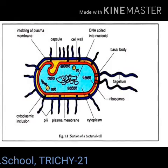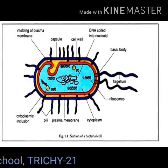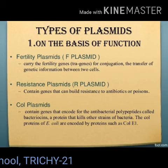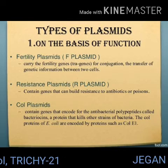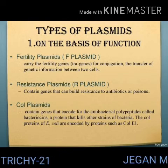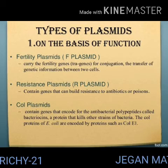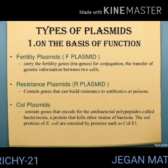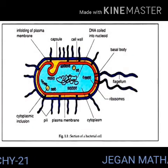The number of plasmids per cell varies, and plasmids are classified into different types based on their function. Some of them are: F (fertility) factors, R (resistant) plasmids, Col (colicine) plasmids, Ri (root-inducing) plasmids, and Ti (tumor-inducing) plasmids.